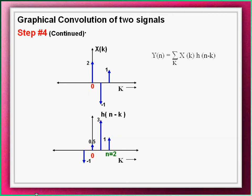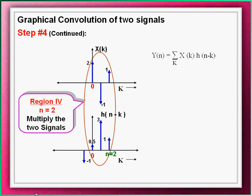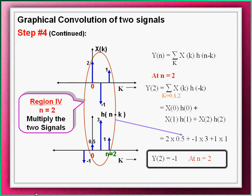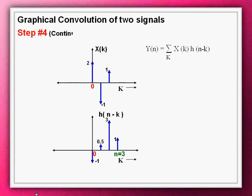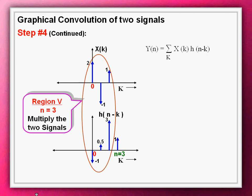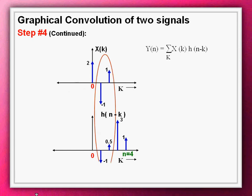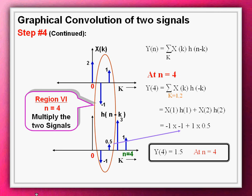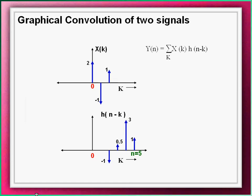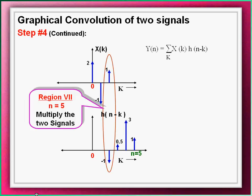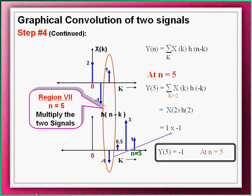Proceeding the same way, at n equals two, signals are multiplied and the convolved result turns out to be minus one. A further shift to h[n minus k] at n equals three gives a convolved result of 0.5. At n equals four, multiplying the overlapped regions, the convolved result is 1.5. At n equals five, multiplying the overlap region, the convolved result is minus one.